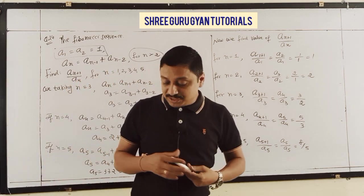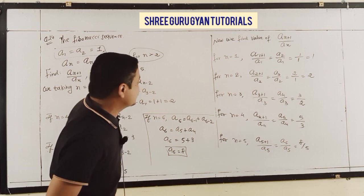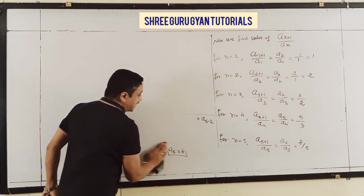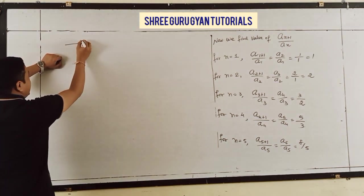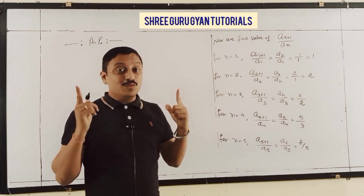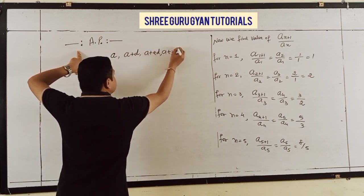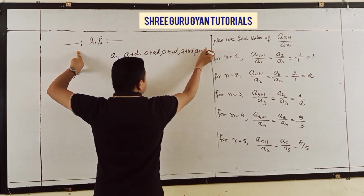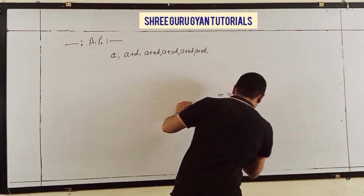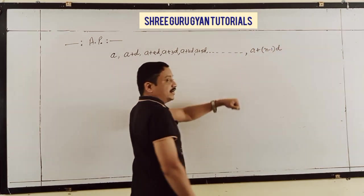Exercise 9.1 and basic sequence work is done. Now I start a new topic: Arithmetic Progressions. This topic is very interesting and easy because you already studied it last year. AP terms are: A, A+D, A+2D, A+3D, A+4D, A+5D, continuing up to the last term A+(N-1)D.